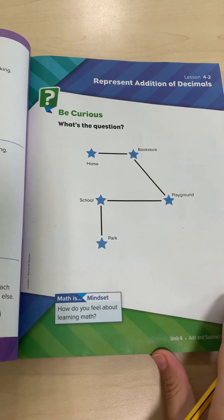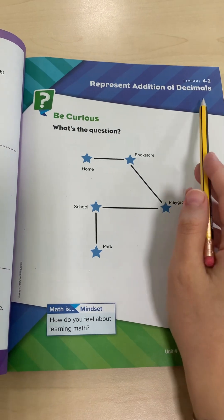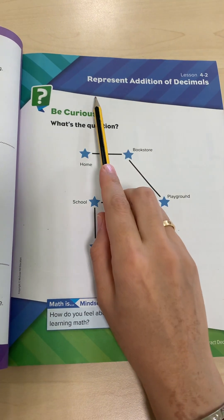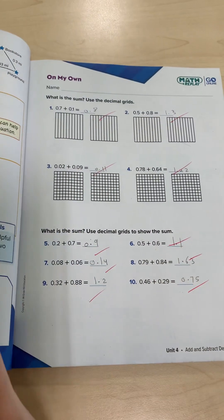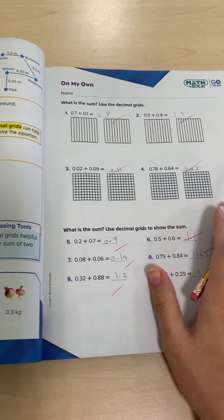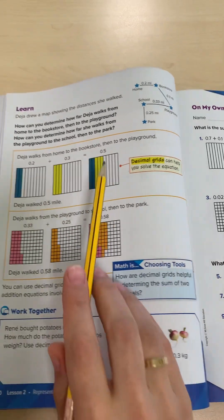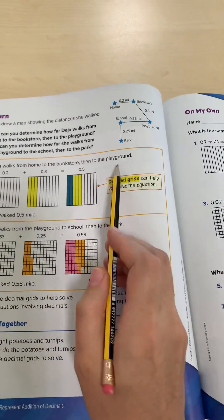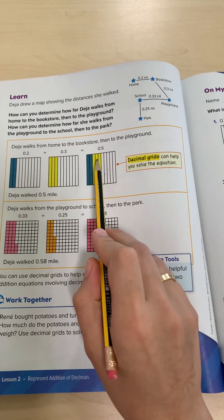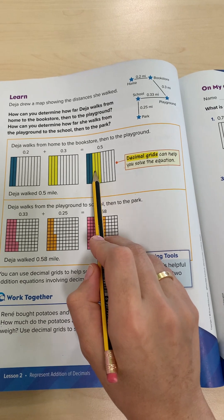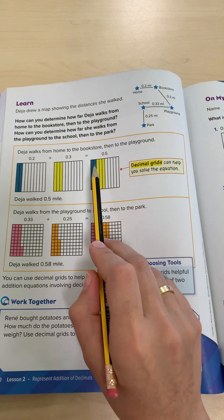Assalamualaikum warahmatullahi wabarakatuh. Let's take Chapter 2, Lesson 4.2: Represent Addition of Decimals. In this lesson we are working on the grid — the decimal grid — where you will color the grid to find the sum or the difference.